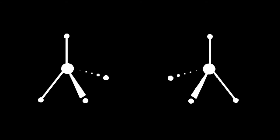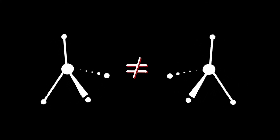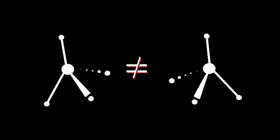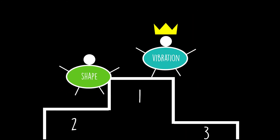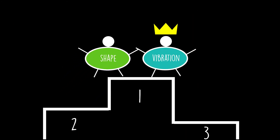However, the vibration model cannot explain everything. For example, chiral molecules are twin molecules with a slight conformational difference. Our nose can clearly smell the difference, yet specific techniques reveal that they do vibrate the same. Therefore, to explain the complex processes happening in our nose and resulting in the one trillion different smells we can distinguish, we probably need a combination of the shape model and the vibration model.